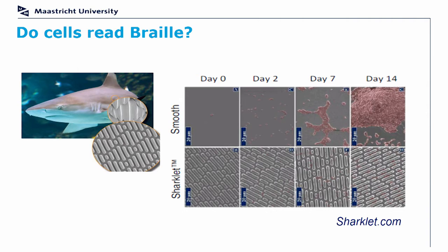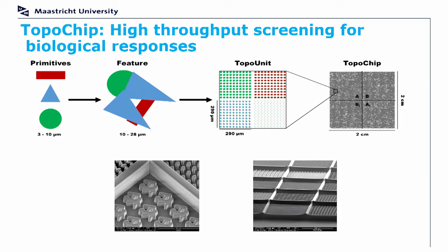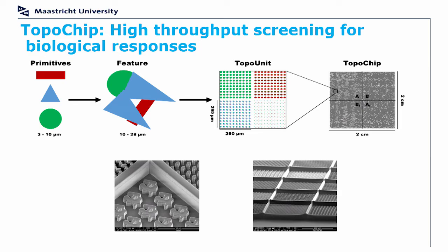We want to understand this better, so we developed a high-throughput screening device where we can look at the interaction of a biomaterial and the surface topography with cell behavior, for more than 2,000 different topographies. Here you can see how it is built up: you have the primitives which combine into a particular feature, and these are then arrayed on the chip.